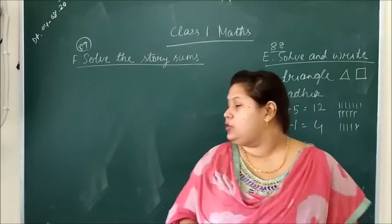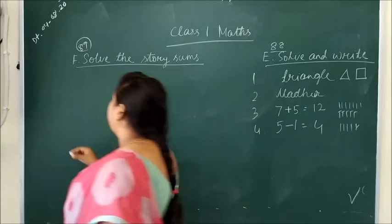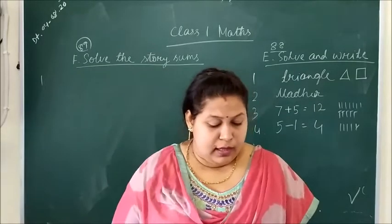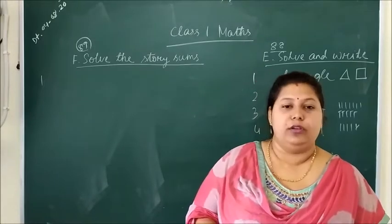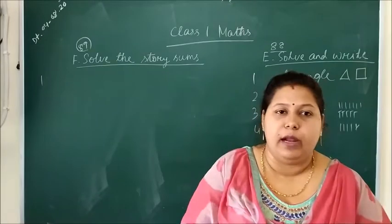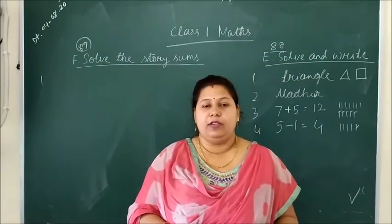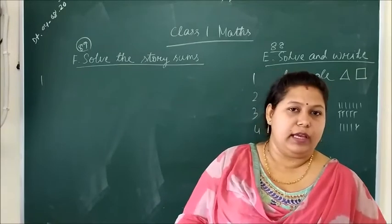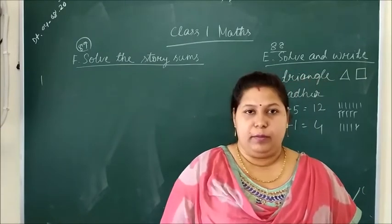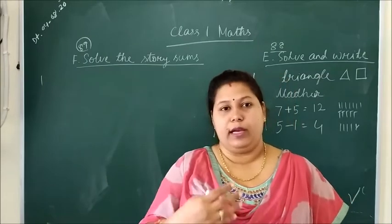So come to the story sum here. Question number 1. Which of these can roll? Which of these can roll? What can roll, can turn around, can roll? Tomato, or spinach. Spinach is a leafy vegetable. That won't roll. Spinach, or palak, that won't turn.